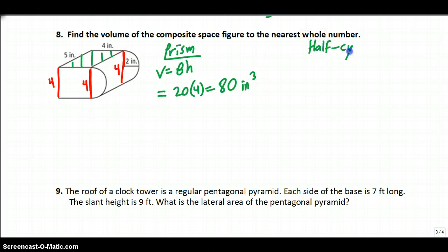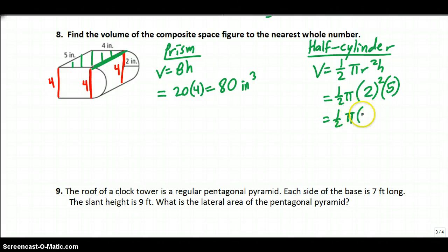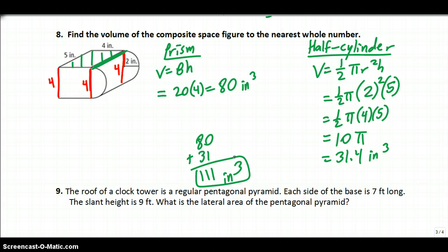Now let's do the half cylinder. Well, normally the volume of a cylinder is pi r squared h, but since we're taking half of it, it'll be one-half pi r squared h. So we take one-half pi. The radius is two, and the height of the cylinder itself is this part, and it's five. So you get one-half pi times four times five. So technically it's 10 pi. One-half of 20 will be 10 pi. And if you take 10 times 3.14, you get 31.4 cubic inches, and then you just add those together. It says to the nearest whole number, so you might as well just go ahead and get rid of the .4 part. But anyway, you get 111 cubic inches.